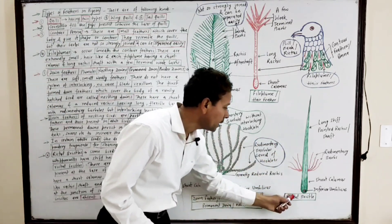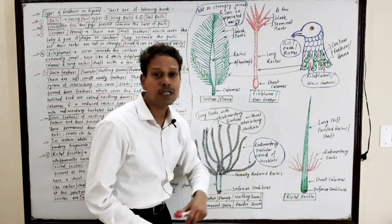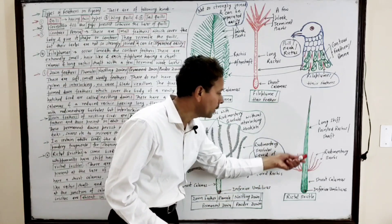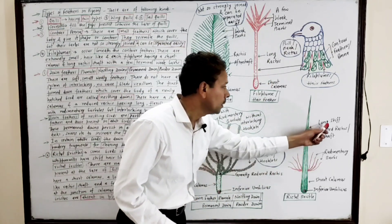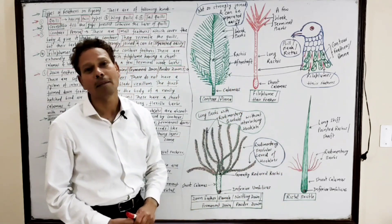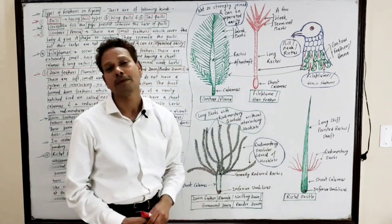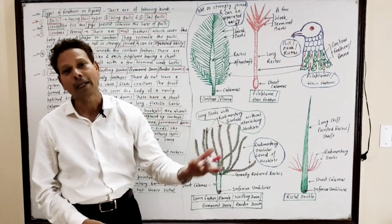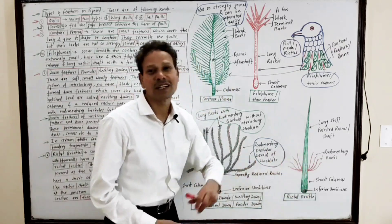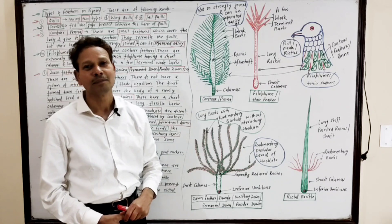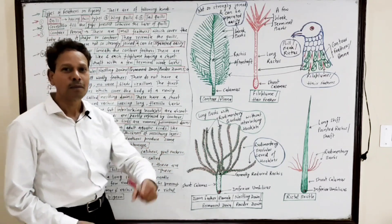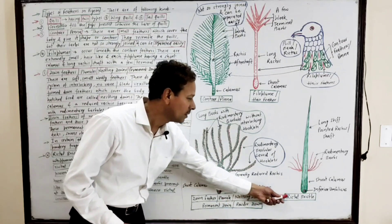In rictal bristles, the short calamus is present. At its basal part, the inferior umbilicus provides nourishment. There is an elongated, fine, needle-like, stiff-pointed rachis or shaft. At the junction of the rachis and short calamus, a tuft of rudimentary barbs is present without any barbules or interlocking system. These fine needle-like feathers occur in birds like flycatchers and goat-suckers, but are absent in pigeons.